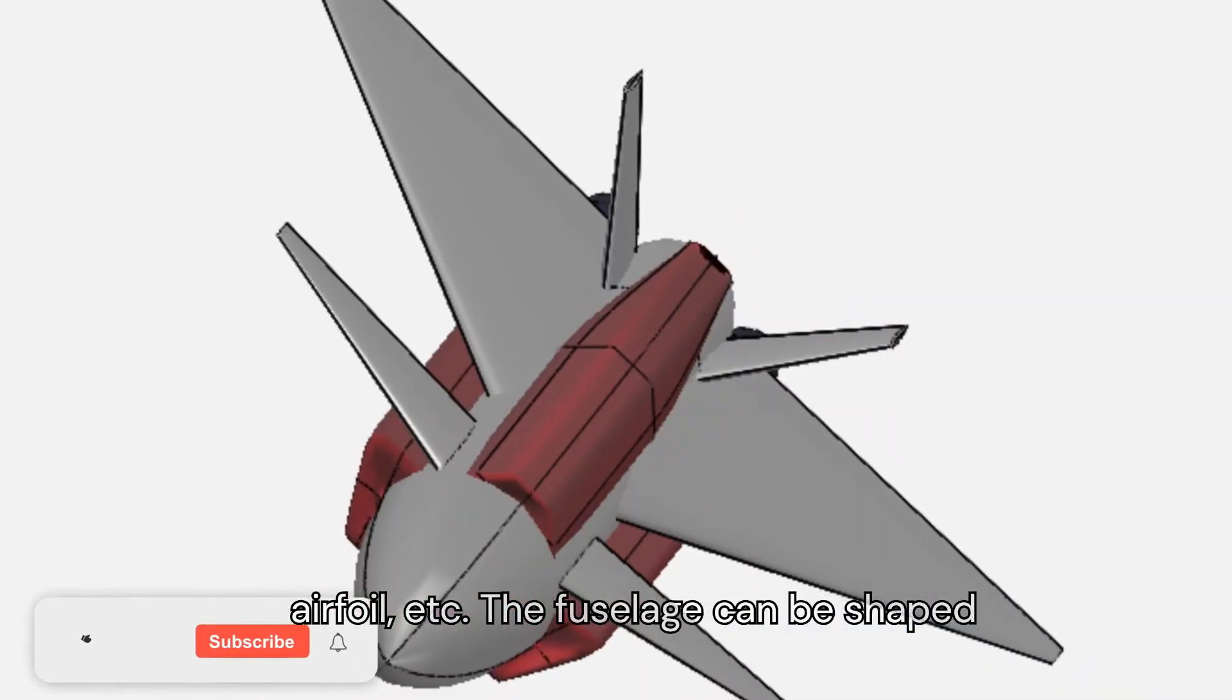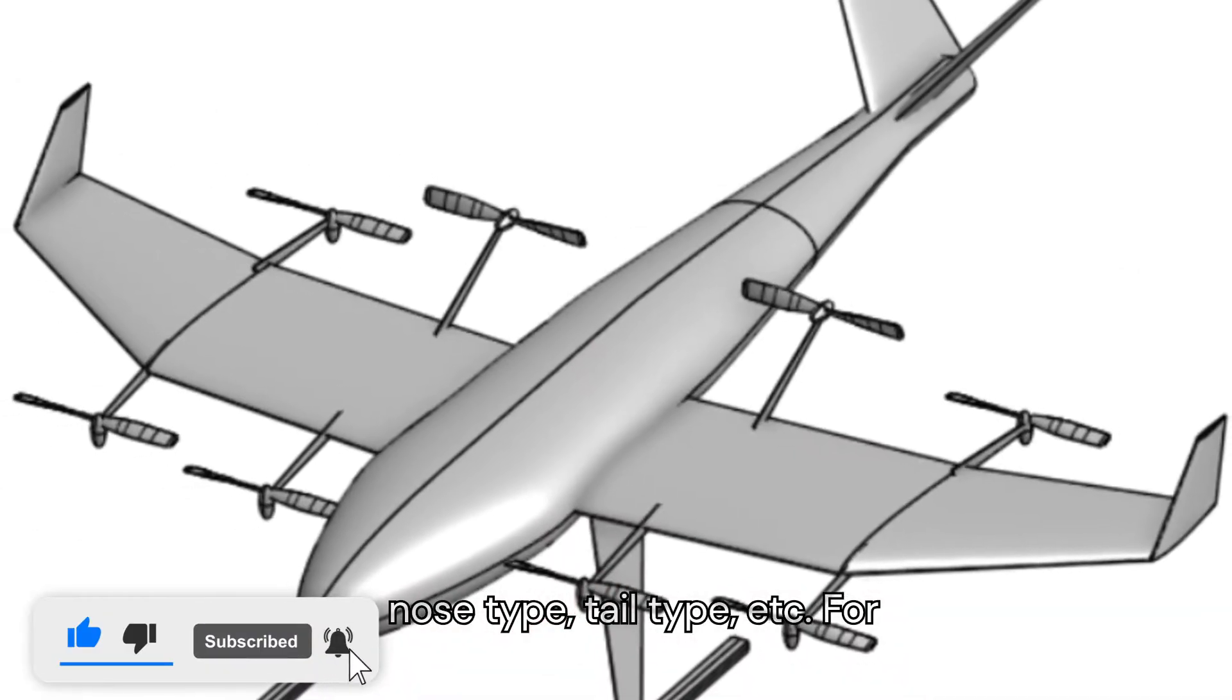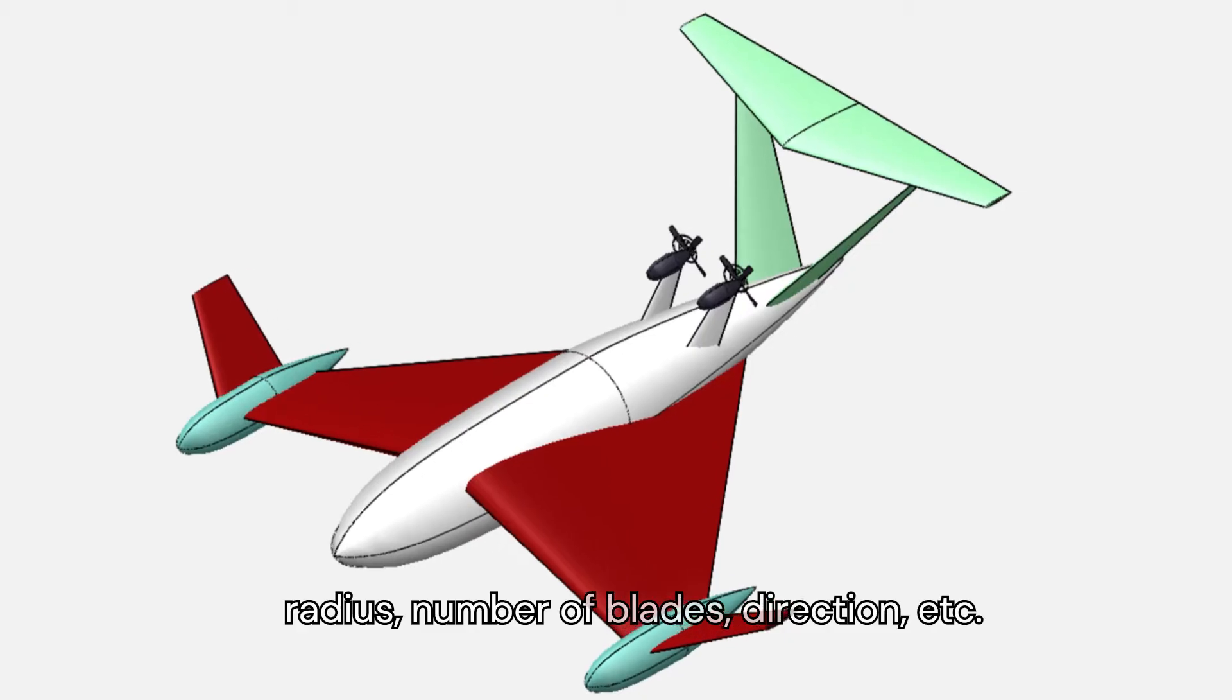The fuselage can be shaped by changing the length, cross-section, nose type, and tail type. For propellers, you can tinker with the radius, number of blades, and direction.